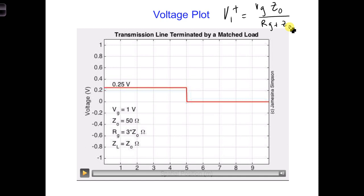Plugging in the numbers, we get V1 plus is equal to Z-naught over 3 times Z-naught. So I'm using these values right here. Rg is 3 times Z-naught, Z-naught.